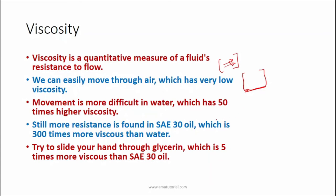Consider SAE 30 oil, which is used in motor engines — it has about 300 times more viscosity than water, so the resistance offered in this fluid is much more than in water. Similarly, glycerin is very viscous compared to water, so it has very high viscosity and cannot be moved as easily.